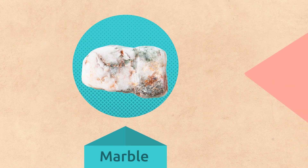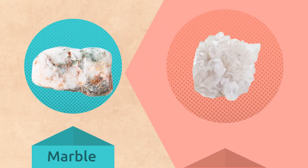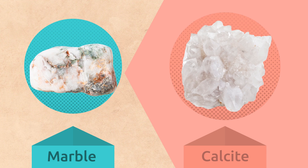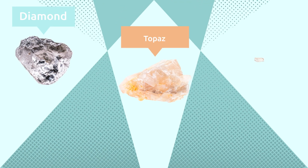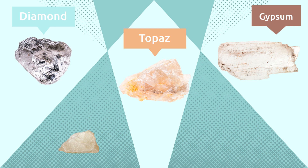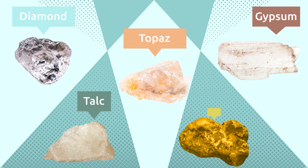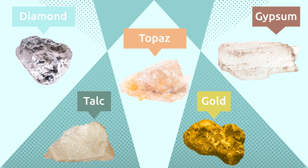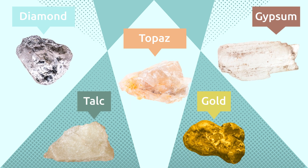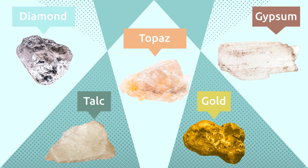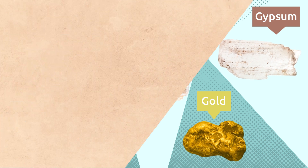Granite, for example, is a rock made up of a mineral called quartz. Marble is another rock made up of a mineral called calcite. Some well-known minerals are diamonds, topazes, gypsum, talc, and gold. Minerals have the following physical properties.